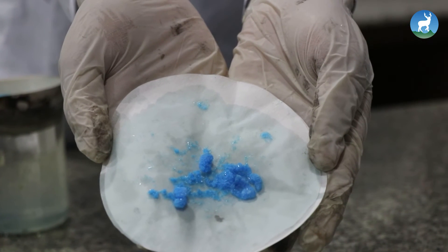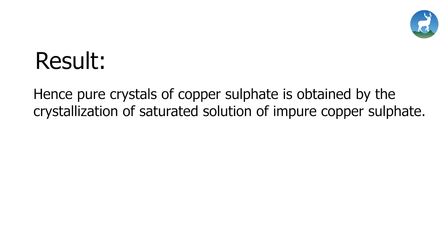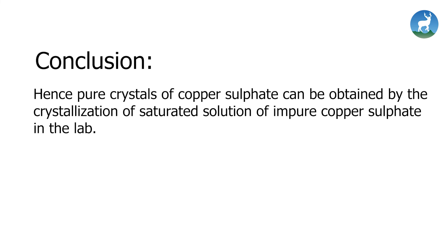Finally, collect the crystals and submit to teacher for inspection. Hence, pure crystals of copper sulfate can be obtained by the crystallization of saturated solution of impure copper sulfate in the lab.